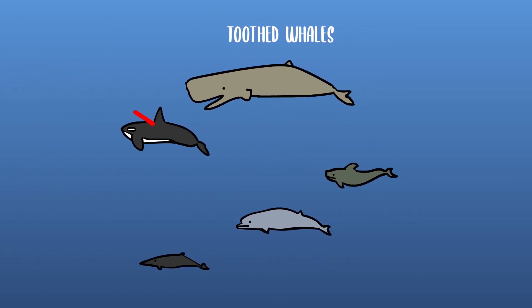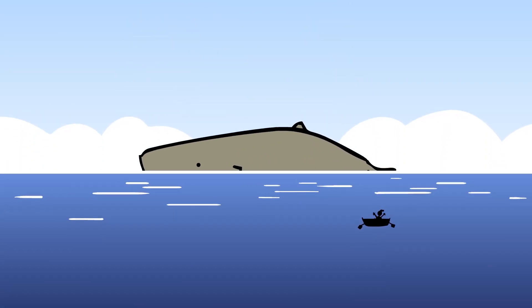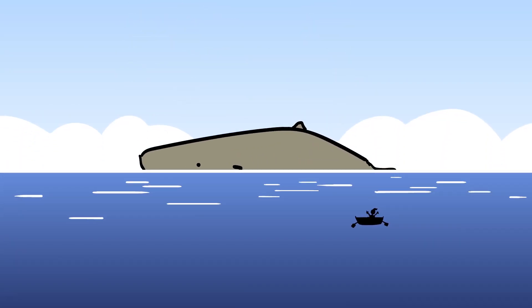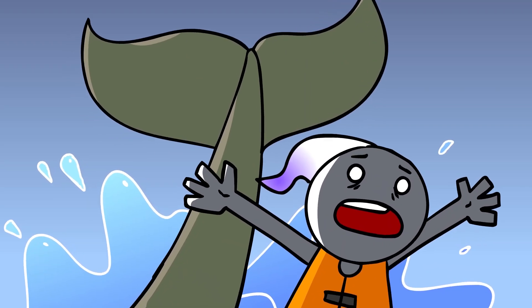Of the toothed whales, orcas cannot swallow you, so the only possible option is the sperm whale. These guys are the largest toothed predators on earth, and an encounter with them is either a nightmare or one of the 1000 ways to die.